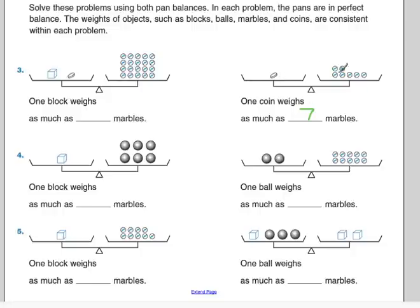Knowing that a coin is worth seven marbles, I can come over to this, and I'm going to get rid of that coin. And instead, I'm going to put seven marbles and substitute. So now I've got one block and seven marbles on the left, and on the right I've got twenty marbles.